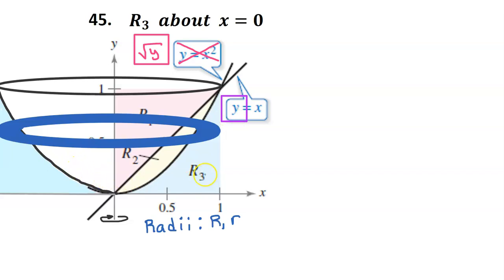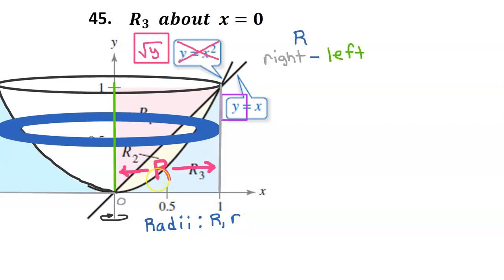Finding the volume of a solid like this is a three-step process. Step one is to find an expression for both radii of the washer. We need an expression for the outer radius, which I will call big R, and the inner radius, which I will call small r. Let's start by finding an expression for the big radius. When a radius is horizontal, you can find the expression by subtracting the function on the right minus the function on the left. In this case, the function on the left is 0.